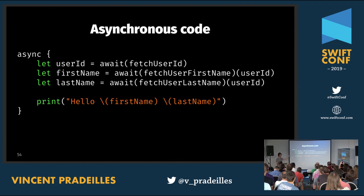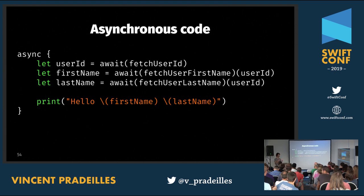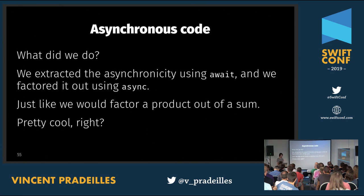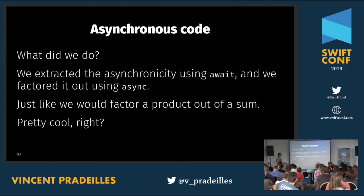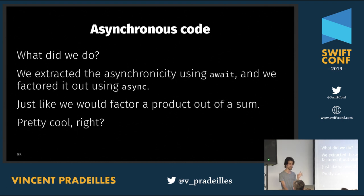Instead of nesting three service calls one inside another in callback hell, we now call them sequentially like synchronous code. This is much easier to maintain — changing the order means changing just two lines. The approach is also algebraic: using `await` we extracted the asynchronicity out of async functions, then with `async` we factored it out — similar to how you'd factor a product out of a sum. Swift lets us implement such powerful behavior in user code.